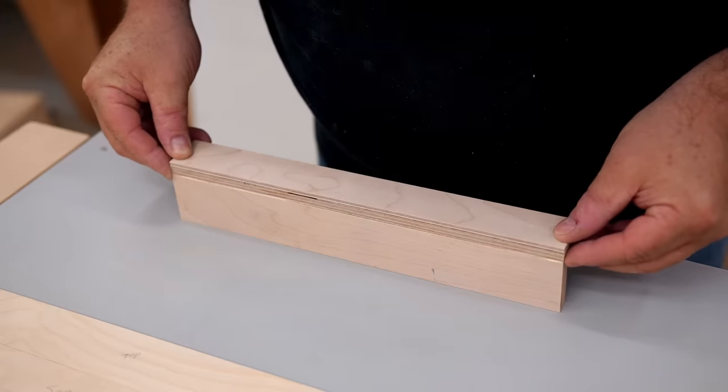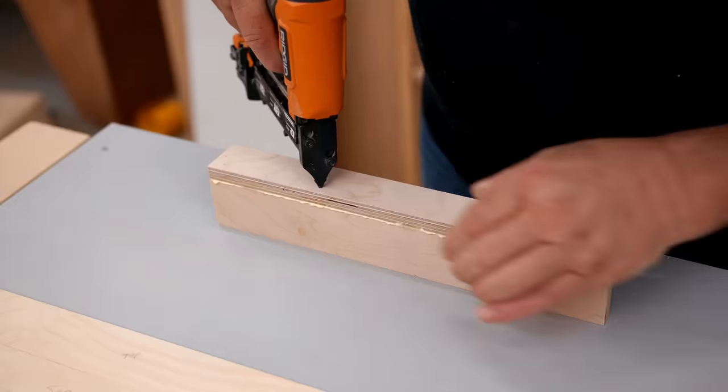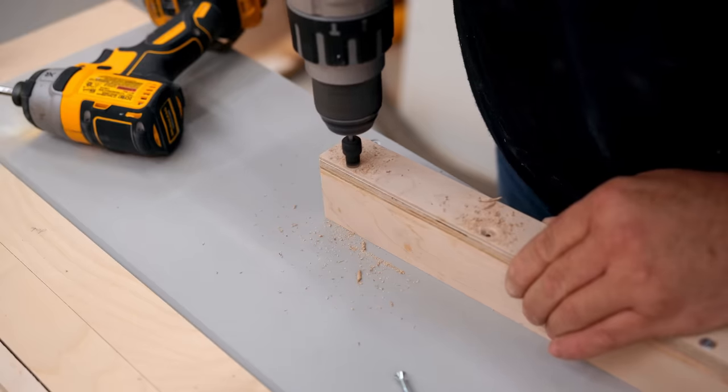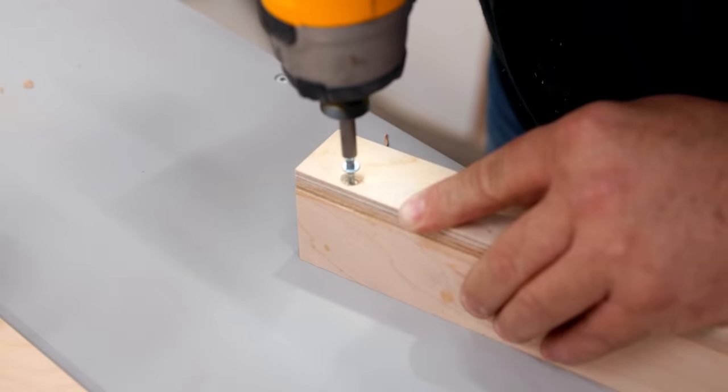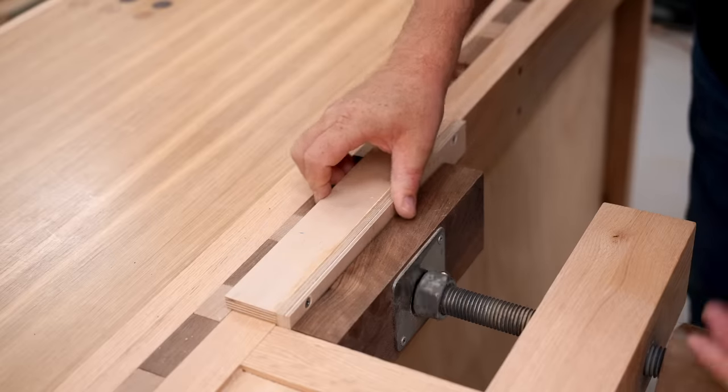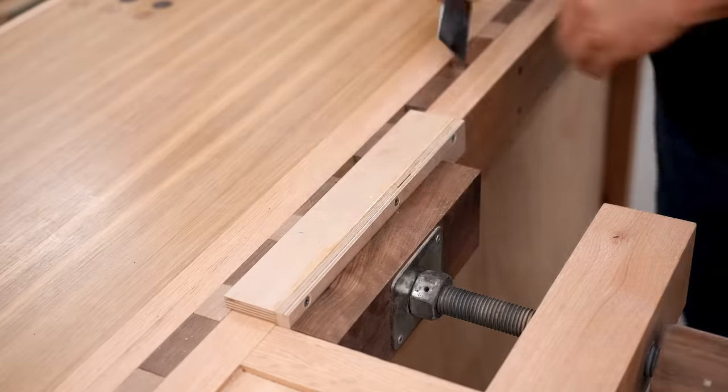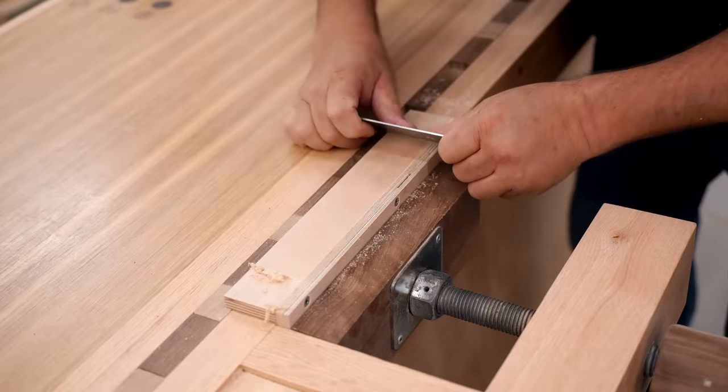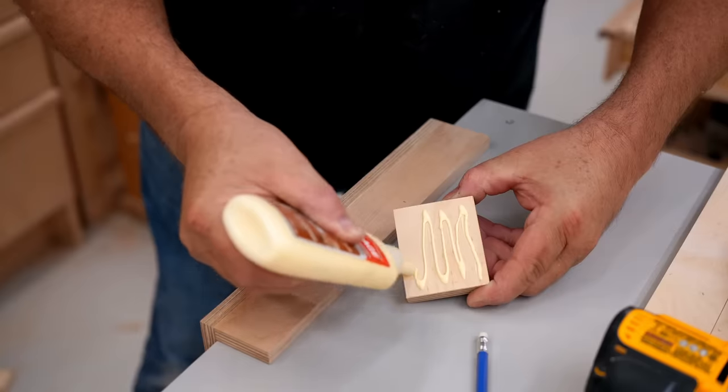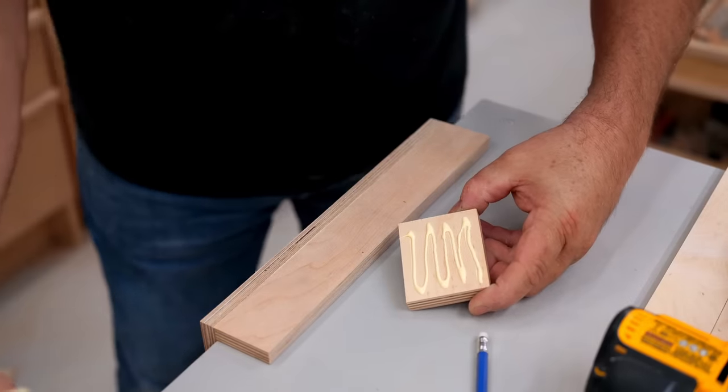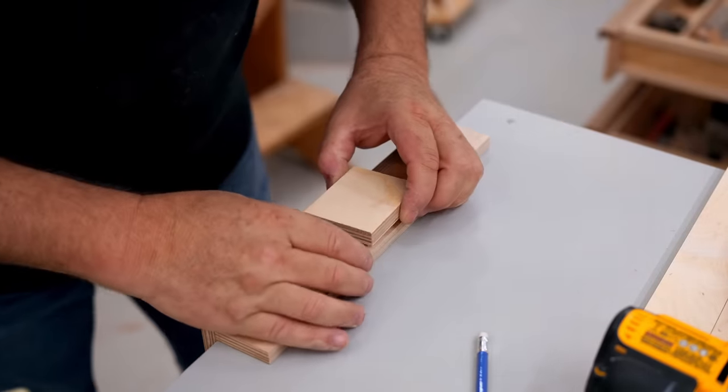Now I can begin assembly starting with the T. These parts get glued together, some pins driven in to keep them from sliding around, and then I'll drive in three screws. I'll let the glue dry on that. Now I can scrape off the excess and make sure the top is nice and clean. The spacer block is glued on next, centered on that T.